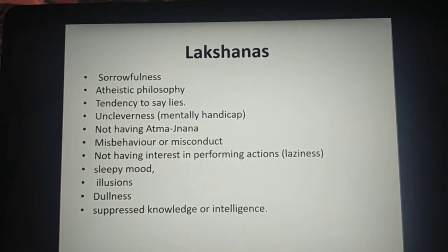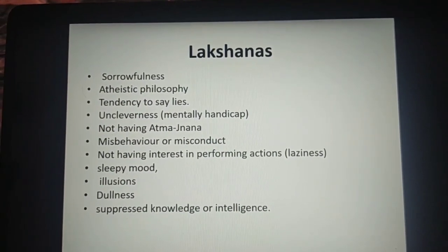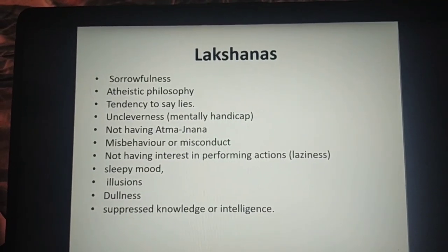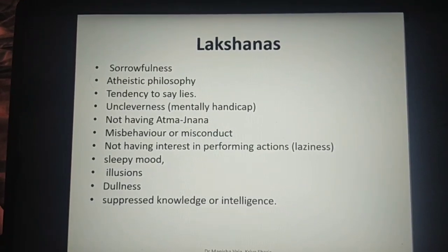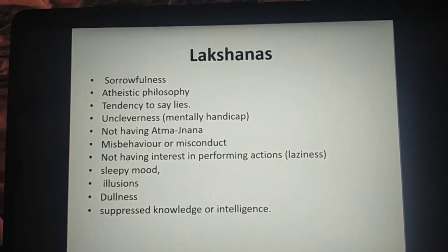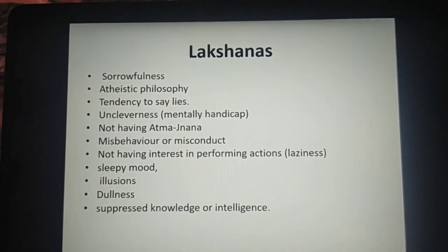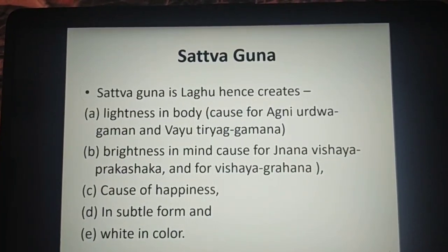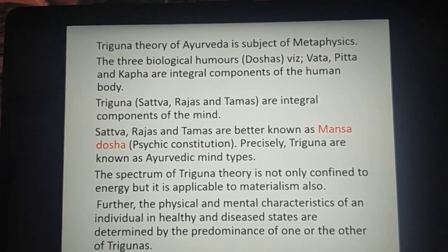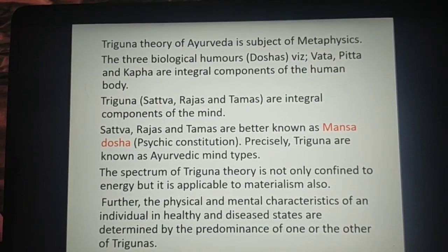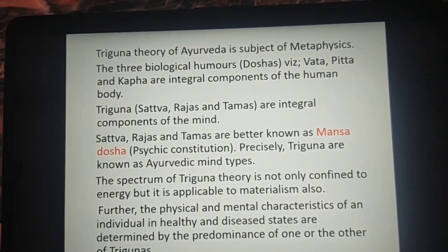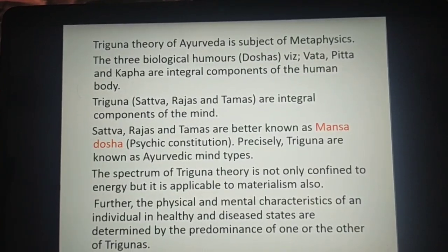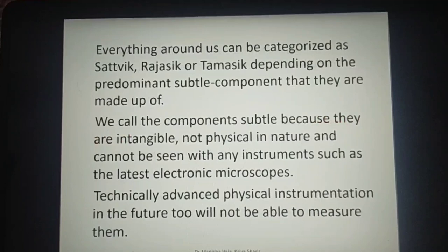This theory has been given by Acharya Charak in Sharir Sthan Adhyaya 4. There are three Gunas — Sattva, Rajas, and Tamas — and they can also be considered as Maha Gunas or Manas Dosha. These three Gunas have different characteristics, and when we learn about Prakriti in detail, we'll revisit them. This topic can be asked as a five-mark question: 'Write about the three Gunas.' It is part of your syllabus.